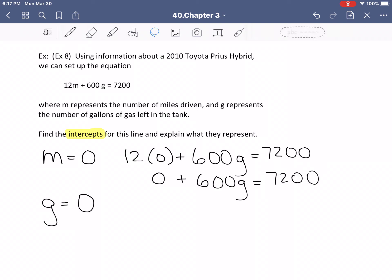And then I'm going to totally cheat because I realized I did not give myself enough room. So I'm going to tuck this guy down there and continue. If 600g equals 7200, then 600g divided by 600 has got to be 7200 divided by 600.